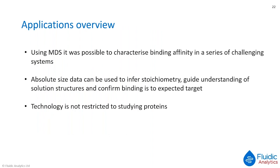To summarize the applications: using microfluidic diffusional sizing, we've been able to characterize binding affinity in a series of challenging systems — particularly the multi-protein cytoskeletal complex and the fibril system. Absolute size data can be used to infer stoichiometry, as shown with the protein A / IgG study, and can help guide understanding of solution structures. It also allows confirmation that binding is to the expected target, providing an additional quality control check. Importantly, the technology is not restricted to proteins, as shown with the aptamer example.